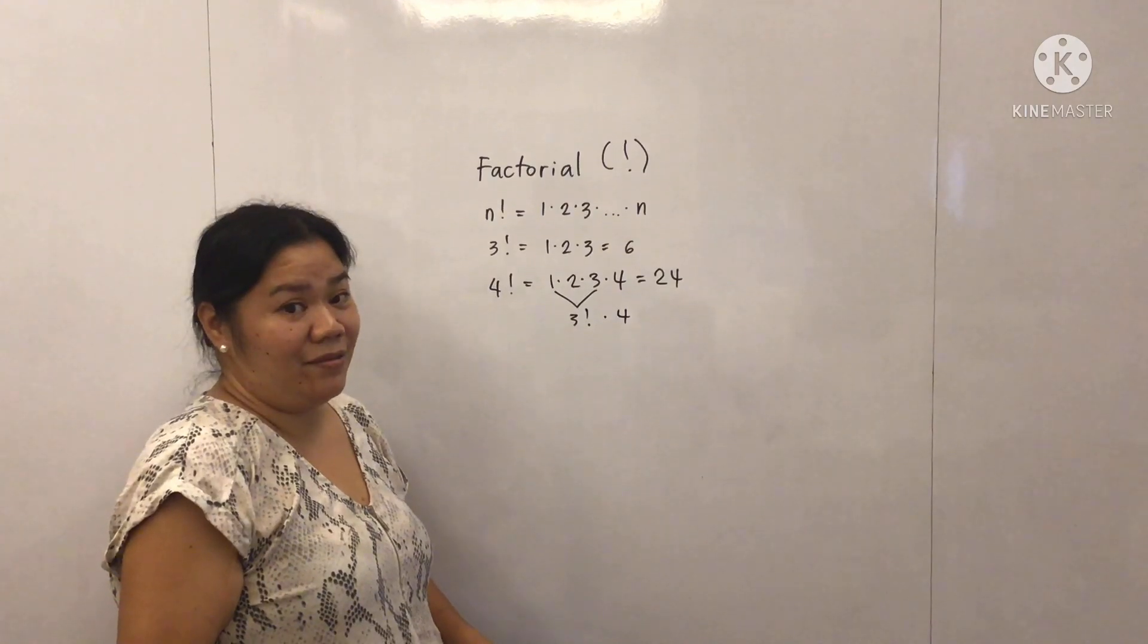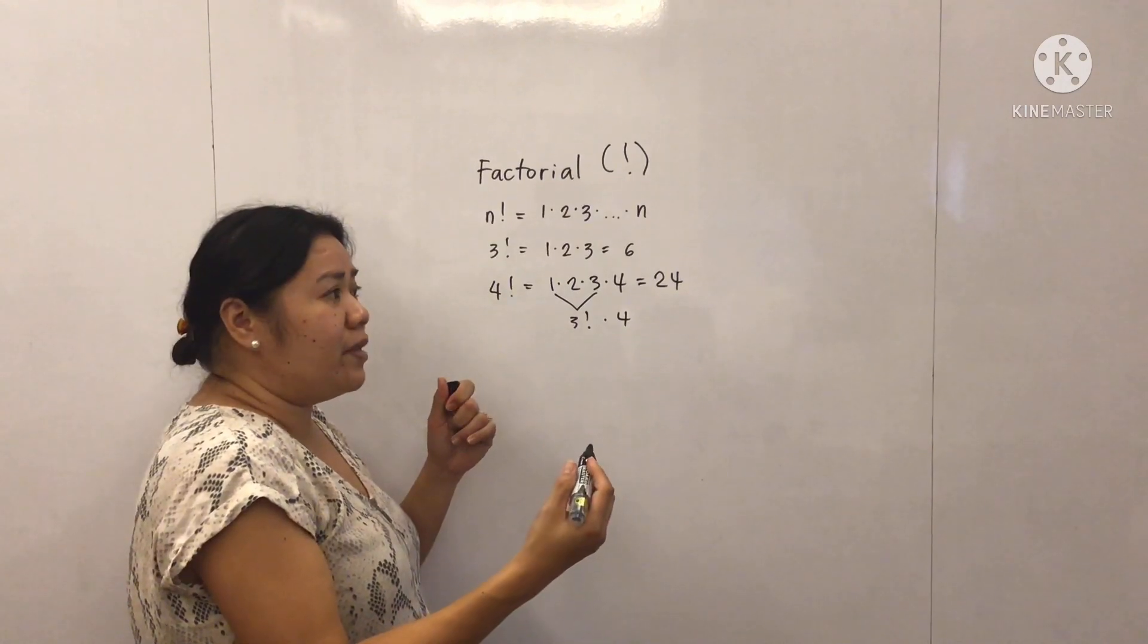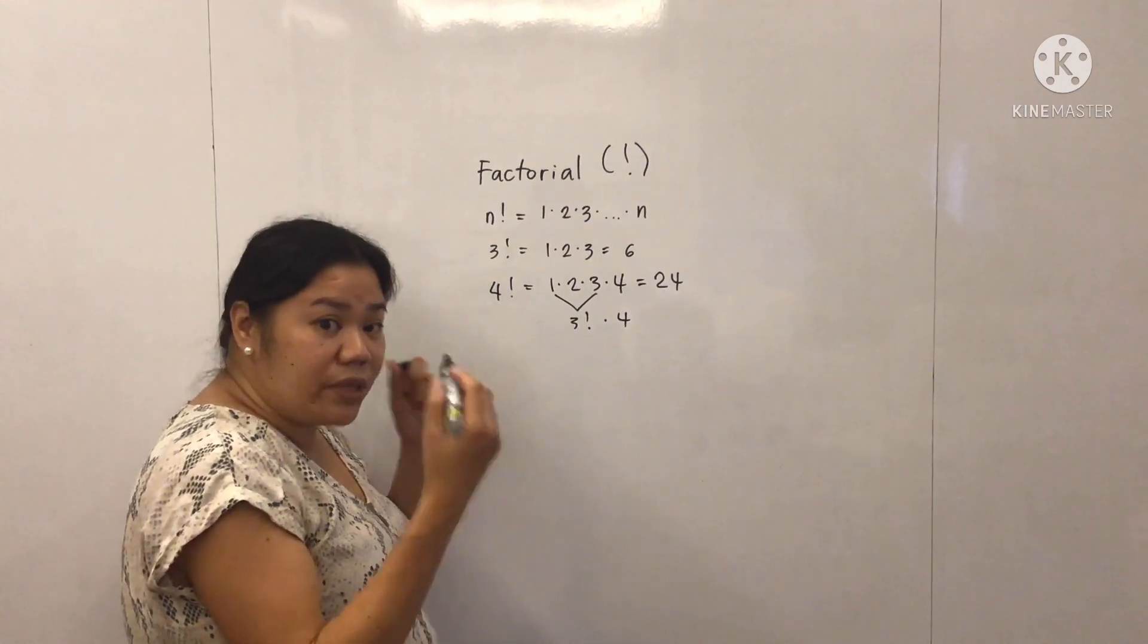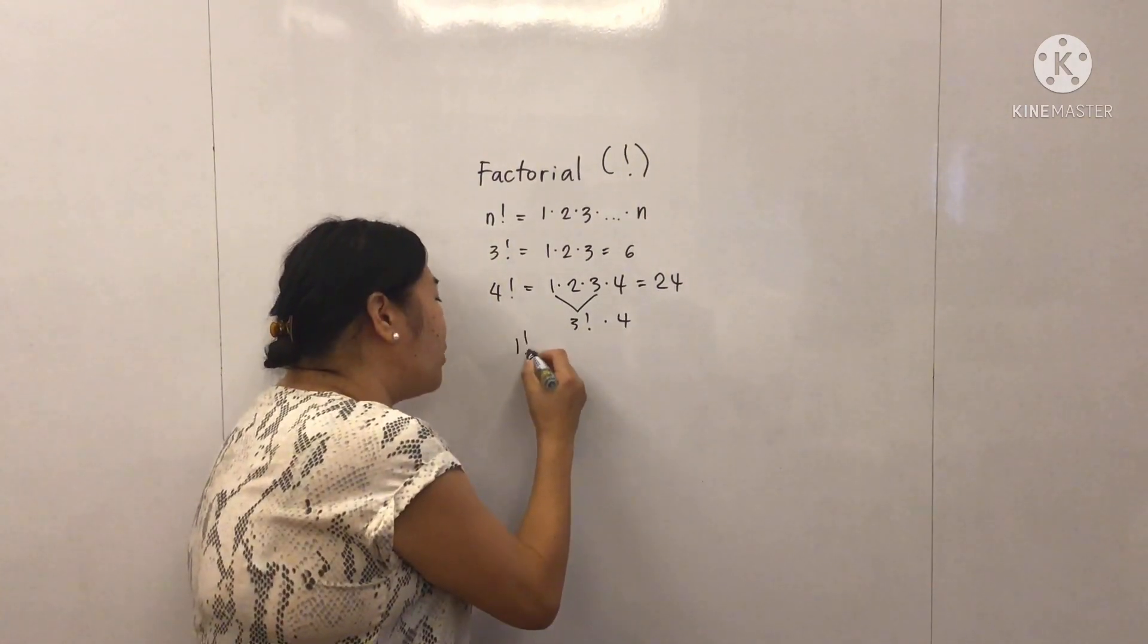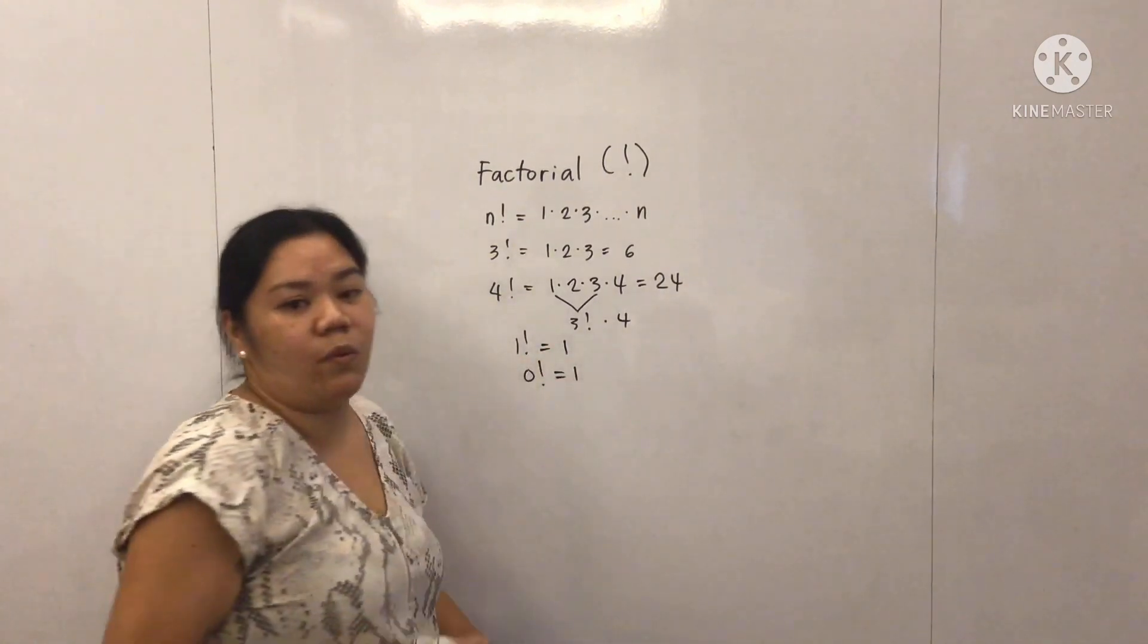Okay, so that's how we solve factorial. And also, it's good to take note that 1 factorial equals 1 and also 0 factorial equals 1.